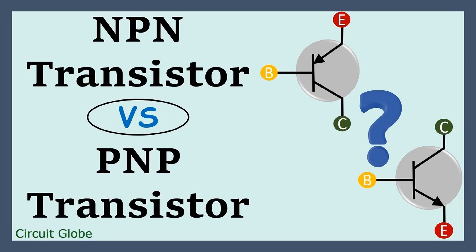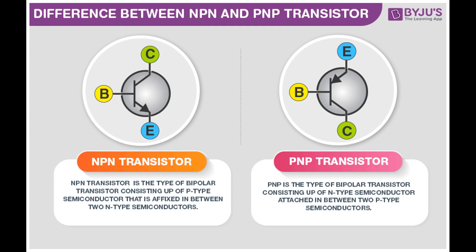In an NPN transistor, the transistor is typically in an OFF state when no current flows into the base terminal. When a small current is applied to the base terminal, it allows a larger current to flow from the emitter to the collector, effectively turning the transistor on. This property makes NPN transistors useful for amplifying signals and controlling the flow of current in electronic circuits. NPN transistors are commonly used in applications such as signal amplification, signal switching, and digital logic circuits, and are versatile components found in a wide range of electronic devices and circuit designs.